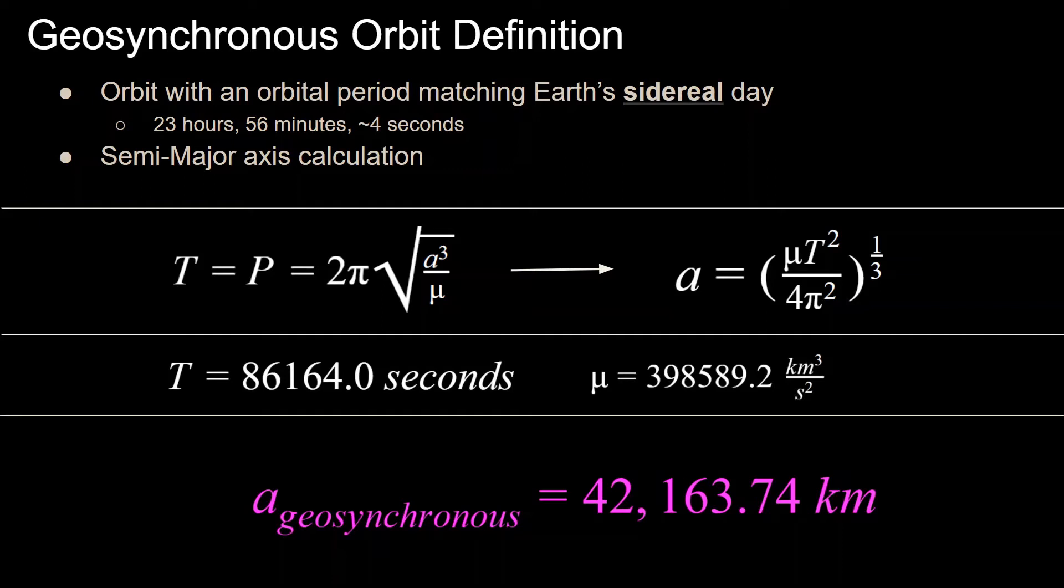Since we know the necessary period for a geosynchronous orbit, we can calculate the semi-major axis from this equation. We have the equation that the period of an orbit, usually noted as either capital T or capital P, is equal to 2π times the square root of the semi-major axis cubed over μ, where μ is the gravitational parameter of the body. From this, we can solve for semi-major axis to get it as a function of period and gravitational parameter μ.